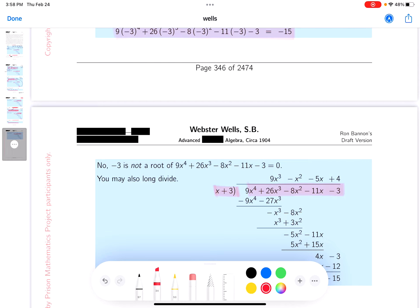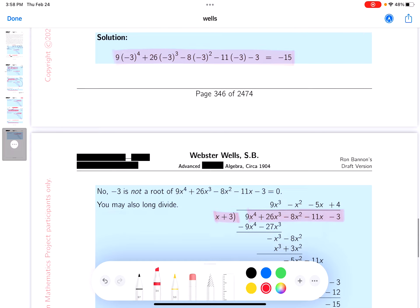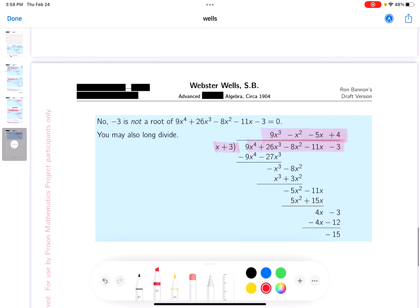That polynomial is 9x^4 + 26x^3 - 8x^2 - 11x - 3. I get the quotient over there and the remainder is -15.